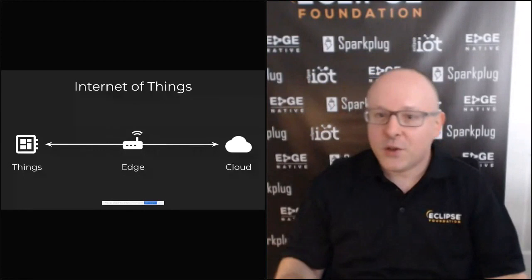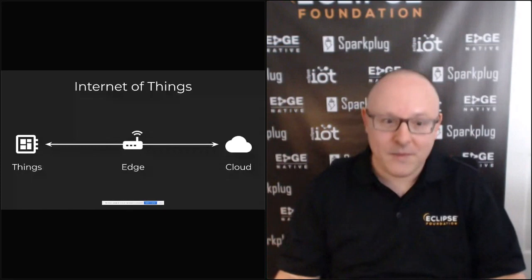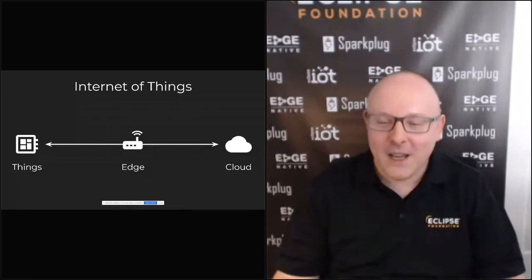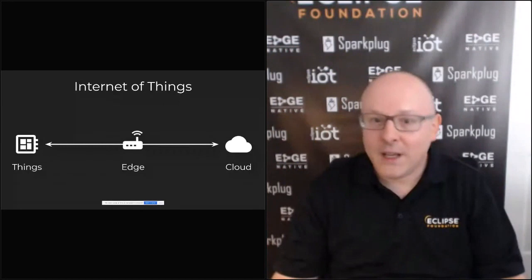With 45 projects, I don't have the time this morning to cover every last one of them, so I had to be a bit selective. But if you want to see the full list of projects in Eclipse IoT — including what we have in the Edge ecosystem — you can go to iot.eclipse.org/projects and you will have the full list.